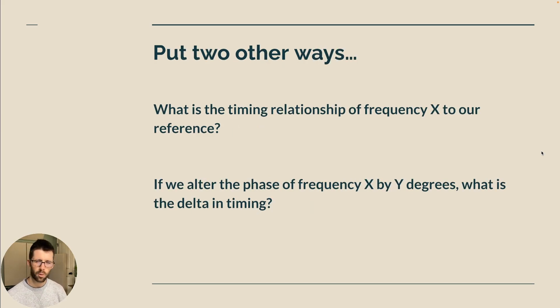So put two other ways, what questions does this help us answer is what's the timing relationship of frequency X to our reference. So a reference can either be the starting point, zero degrees, or we could actually be doing a transfer function in a software like SMAART and be comparing it to the original signal. And basically we're saying, whatever processing is happening in between our input and output, show us the difference in phase from whatever processing is happening.